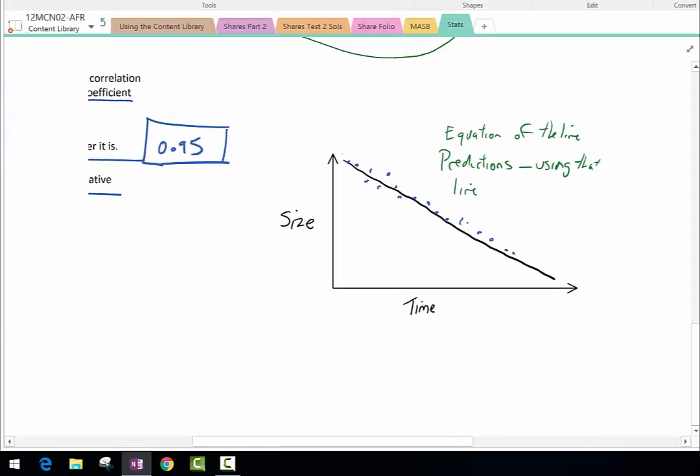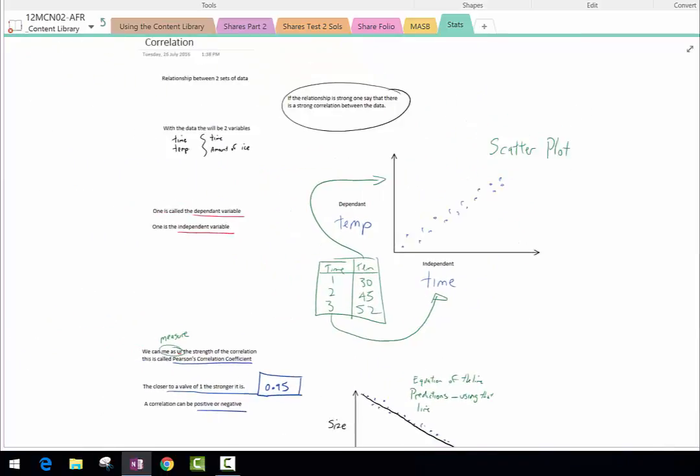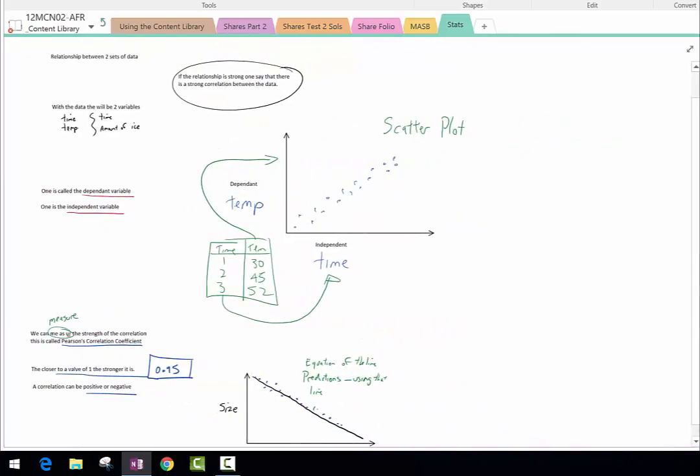All in all, correlation is really just looking at the relationship between two bits of data and then how we can actually use that to plot and graph and make predictions within statistics.